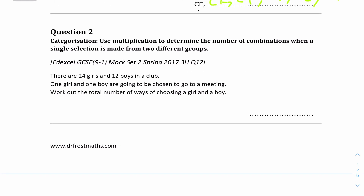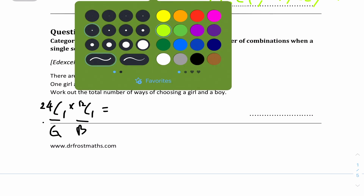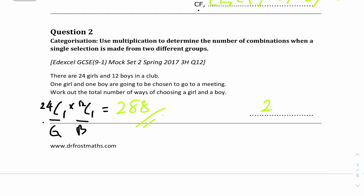Question two: there are 24 girls and 12 boys in a club. One girl and one boy are going to be chosen to go to a meeting. Work out the total number of ways of choosing a boy and a girl. We set up one spot for a girl and one for a boy. There are 24 girls, so 24C1. The order doesn't really matter because 24C1 is the same as 24P1, which is just 24. So 24C1 times 12C1 gives 288. That's the answer: 288.